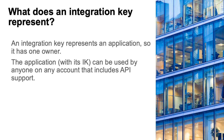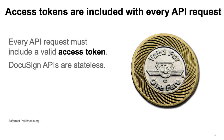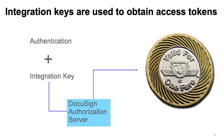An integration key represents an application, so it has one owner. The application, with its IK, can be used by anyone on any account that includes API support. Most DocuSign APIs require that an OAuth access token is included with every API request. The access token is sent to DocuSign in the authentication HTTP header of the API request, and to obtain an access token, your application needs an integration key.